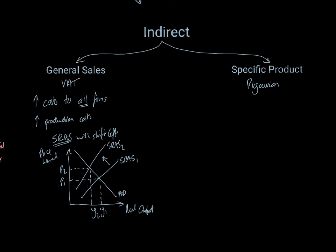Now, the difference with a product specific tax is that it increases production costs in specific markets. That's the difference here. So the general sales tax was on all firms. This one is only in specific markets. And because it's only in specific markets, you should analyze it with a micro diagram.